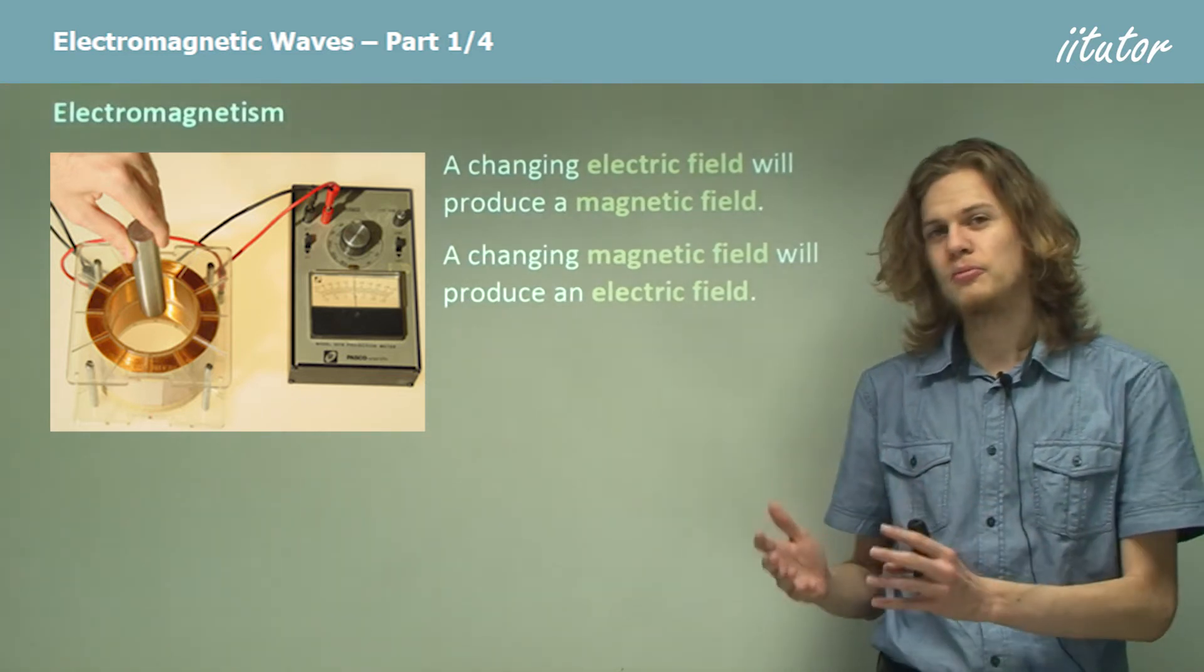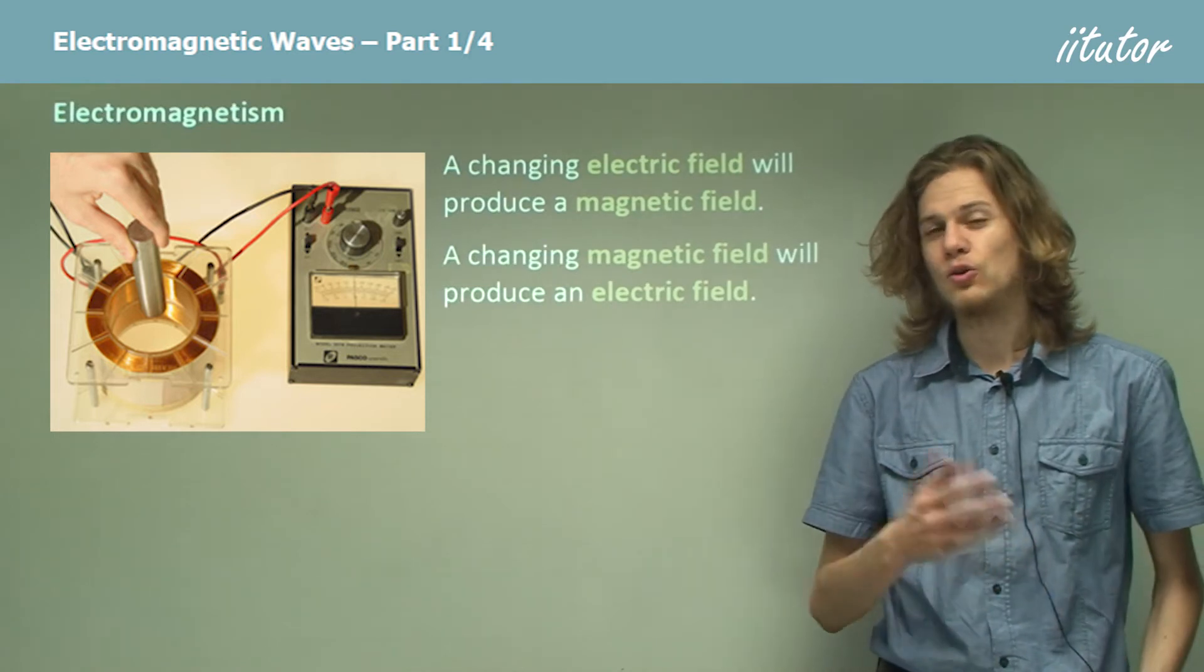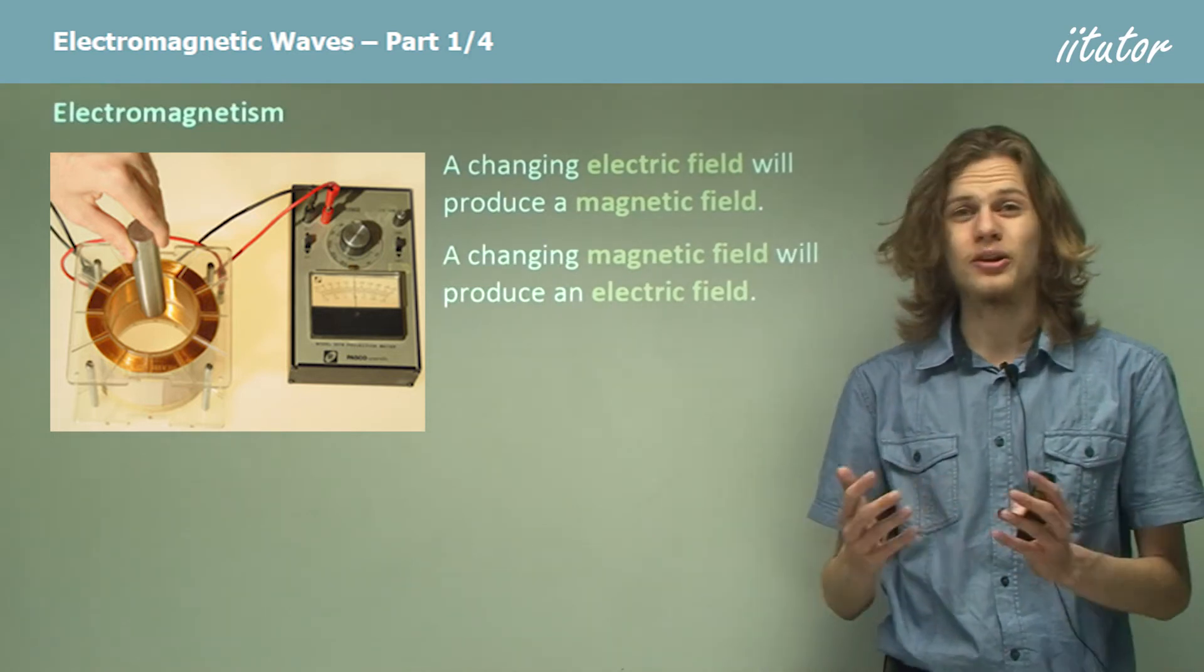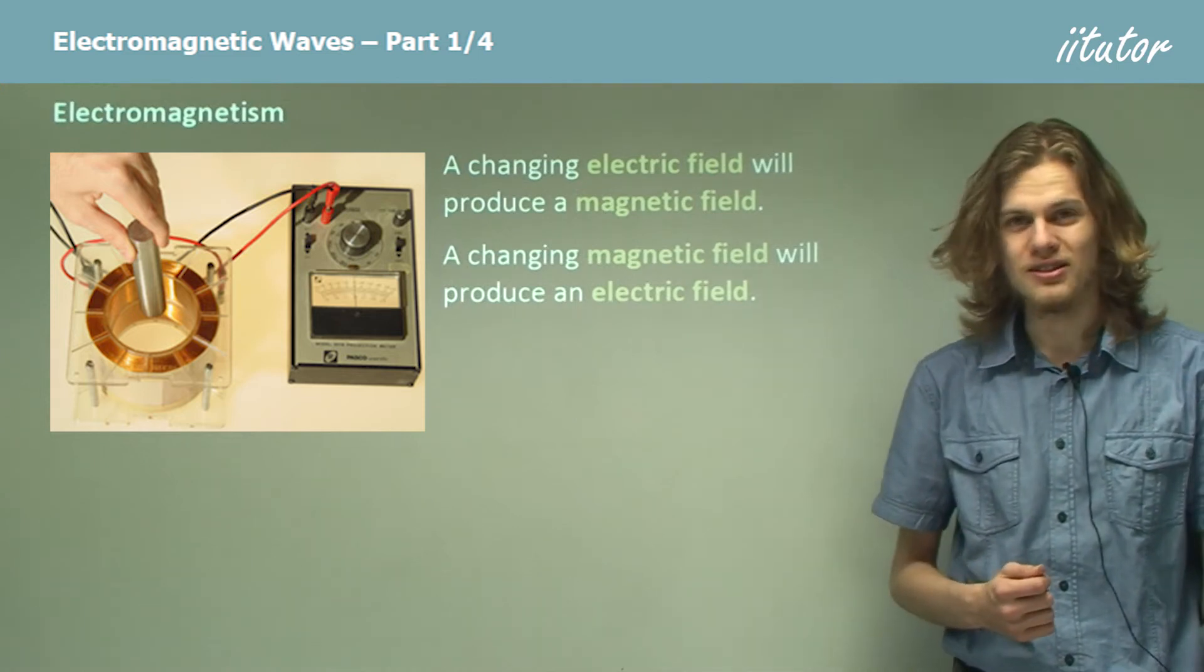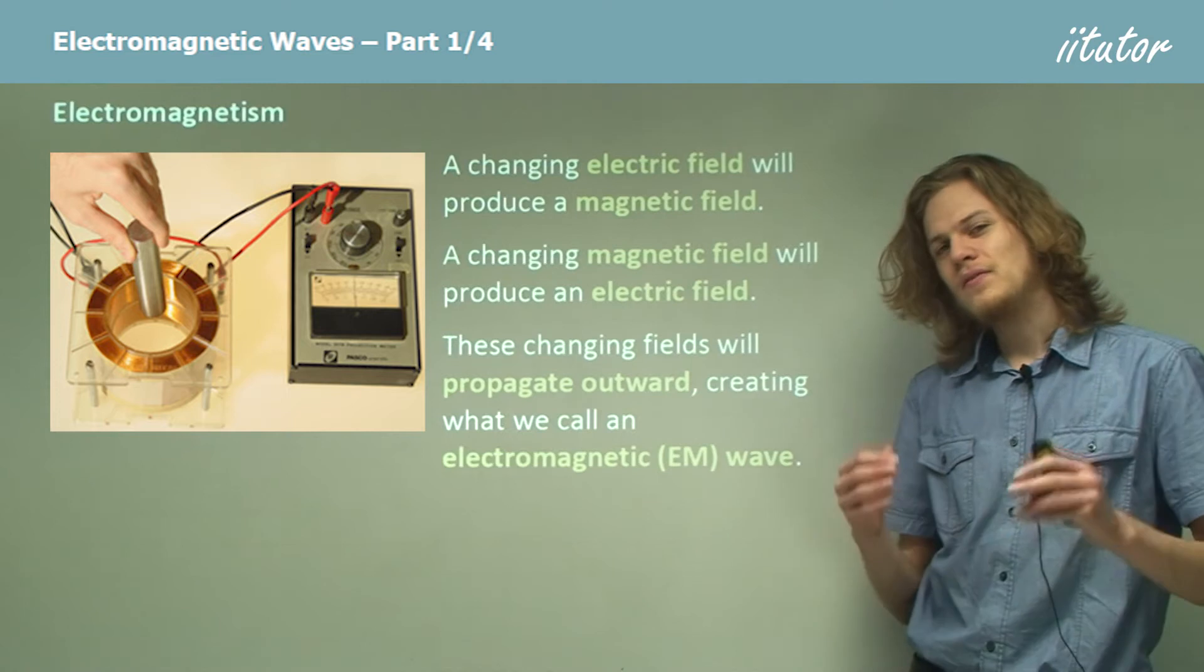That means that by taking, for example, a permanent magnet and spinning it around or moving it quickly, you can create an electric current. And in fact, this is the basis of all electricity generation these days.